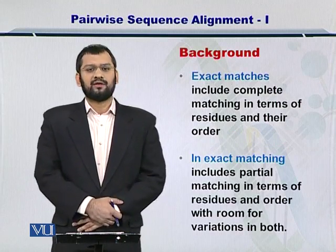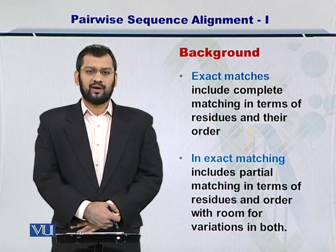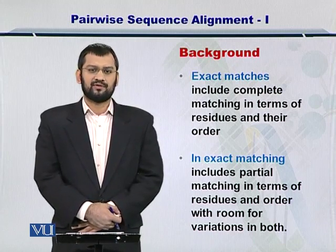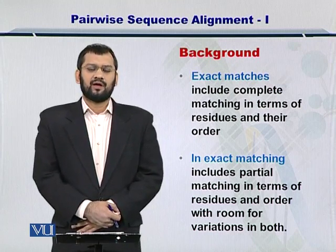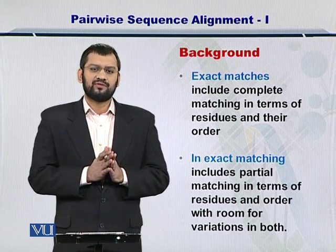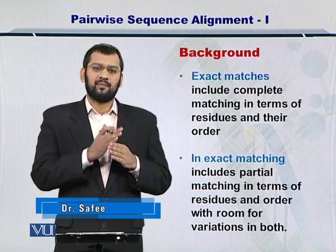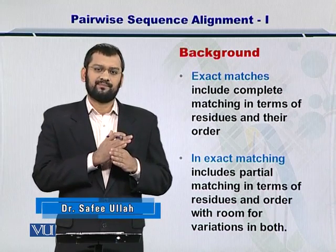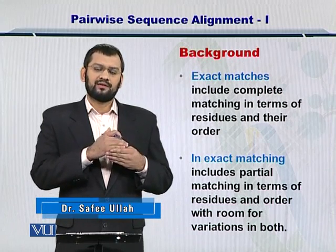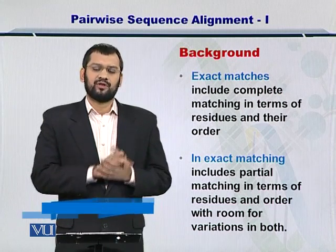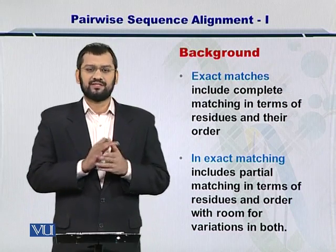You already know that there are two types of matches when you're trying to compare two biological sequences. Exact matches are when you have two sequences and they're matching with each other amino acid by amino acid, or nucleotide by nucleotide, and they are in the exact same order. In this way you can obtain an exact match.